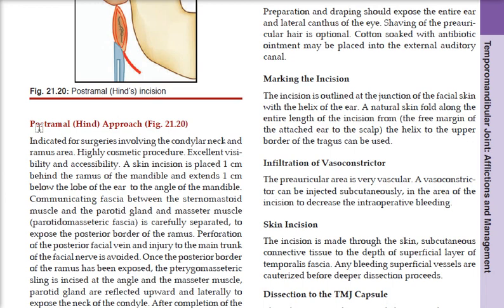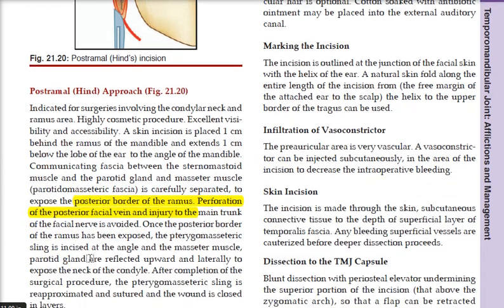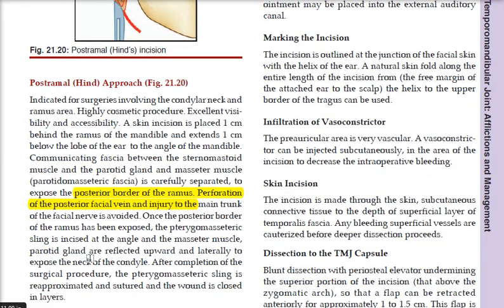This is a highly cosmetic procedure with excellent visibility and accessibility. A skin incision is placed 1 cm behind the ramus of the mandible, extending 1 cm below the earlobe to the angle of the mandible. The fascia, sternomastoid muscle, parotid gland, and masseter muscle are separated completely to expose the posterior border of the ramus. Care must be taken to avoid perforating and injuring the main trunk of the facial nerves. Once the posterior border of the ramus is exposed, the pterygomassetic sling is incised at the angle.